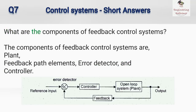What are the components of feedback control systems? The components of feedback control systems are: plant, feedback path elements, error detector, and controller.